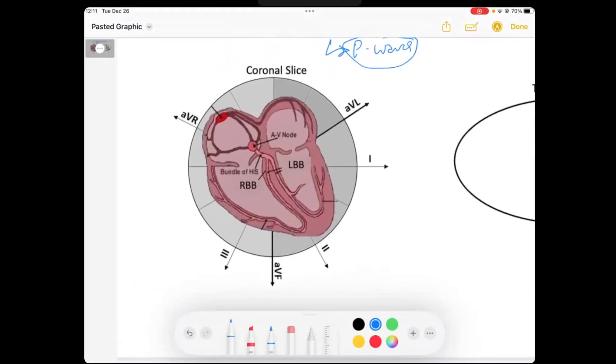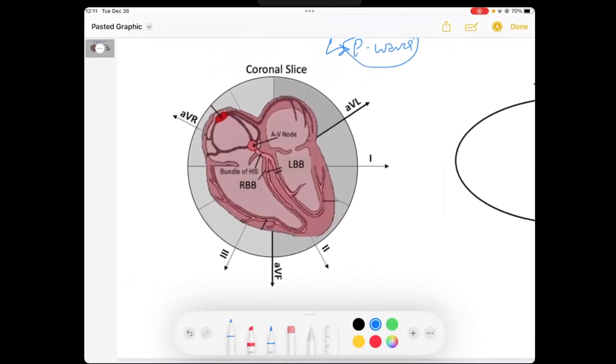If we look at this coronal slice, remember, let's just do a quick review. We have our sinus node here in the upper right hand. It's going to fire off and depolarize the atria, right? This is going to produce the P wave.